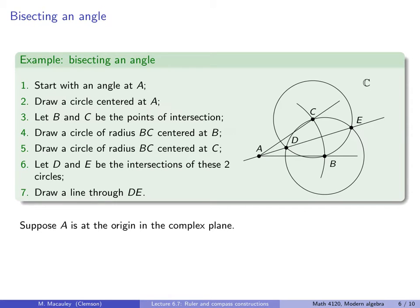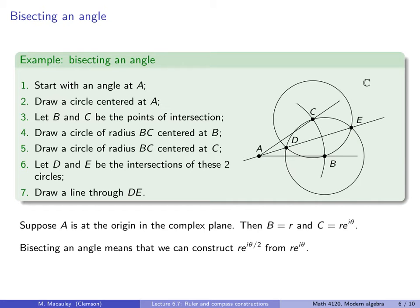Let's interpret this more formally. Suppose A is at the origin in the complex plane. Then B equals R, the real number R, and C, as a complex number, is Re^{iθ}, where θ is the angle at A. Bisecting an angle formally means that we can construct the complex number Re^{iθ/2} from the complex number Re^{iθ}, which is point C.